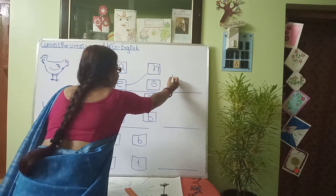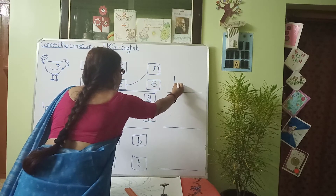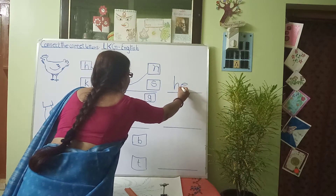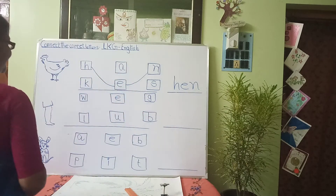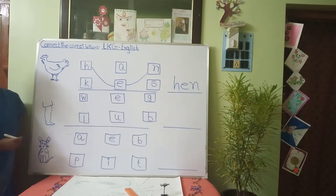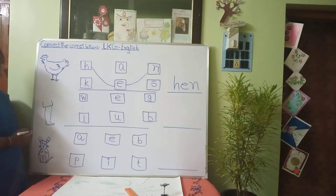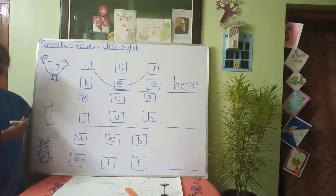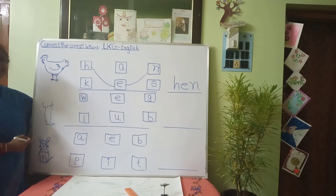Then H, E, N. What is this? This is a picture of a leg. The starting letter of leg is L. The next letter is E, and the last letter is G. L, E, G. Leg.